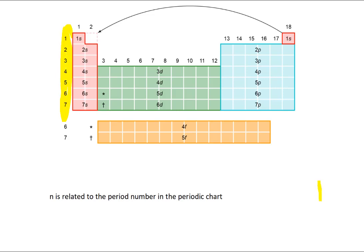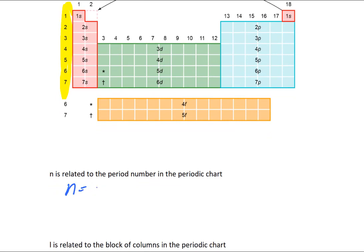So notice how in S block, so S block is your red block, n equals the period number. Then in your P block, in your S block, your period. That's going to be the same thing for your P block. So in your P block, you also see the period and n are the same thing. What I mean by that is see how you have period number three here, and then you have a three here and a three here. So your period equals your energy level.